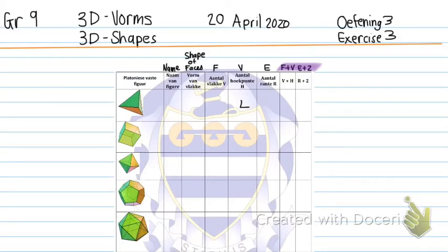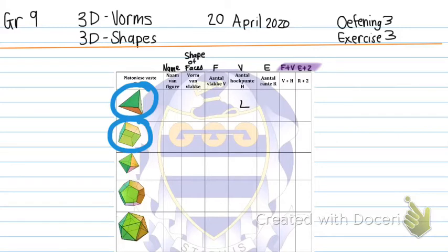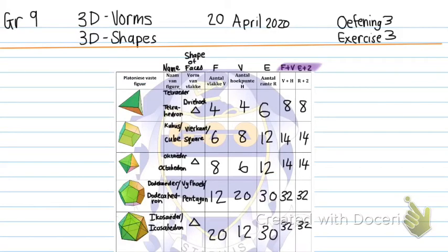Platonic figures are 3D figures made up of the same shape. If we look at the first one, we can see it's all triangles put together. The second one is all squares put together to make a 3D figure. Let's quickly look at this — please follow my highlighter as I go.